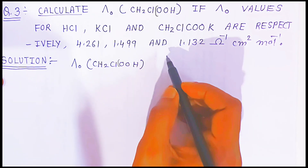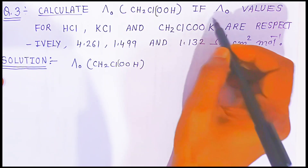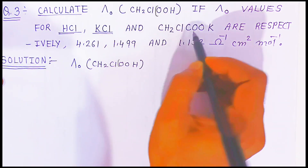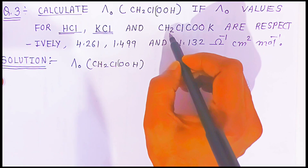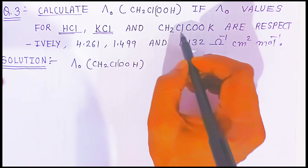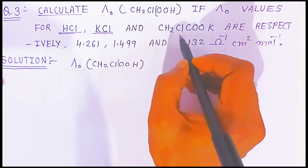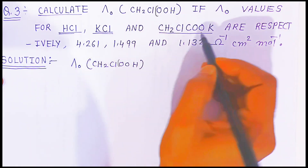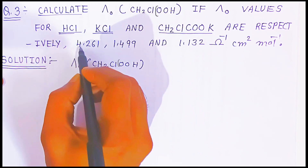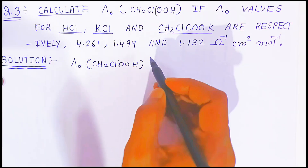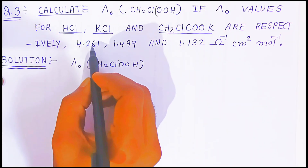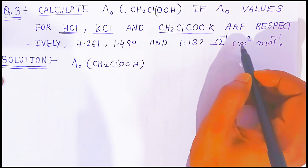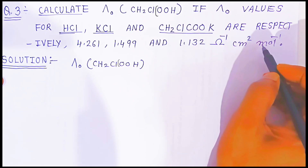We need to find the molar conductivity at zero concentration of monochloroacetic acid, given the molar conductivity at zero concentration of HCl, KCl, and the potassium salt of monochloroacetic acid (potassium monochloroacetate). These are given respectively as 4.261, 1.499, and 1.132 ohm⁻¹ cm² mol⁻¹.